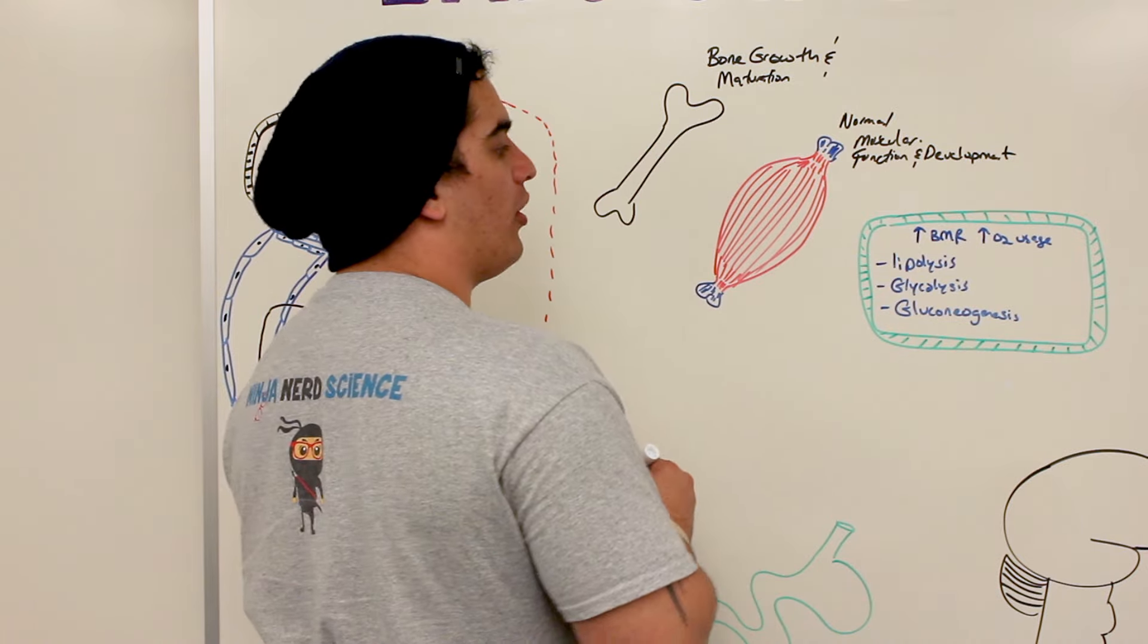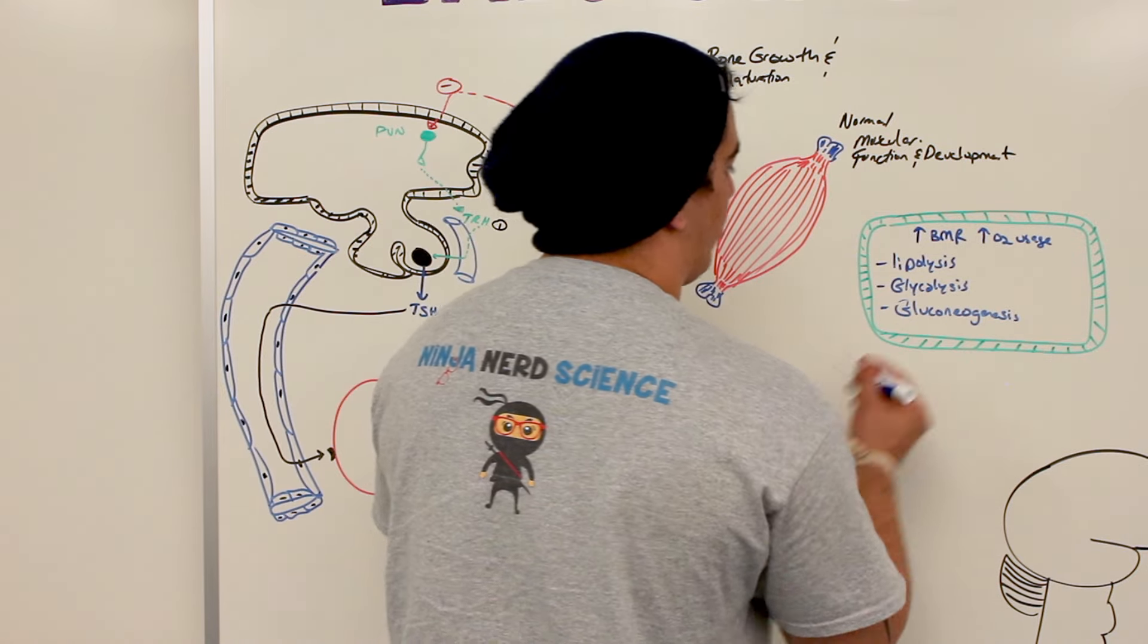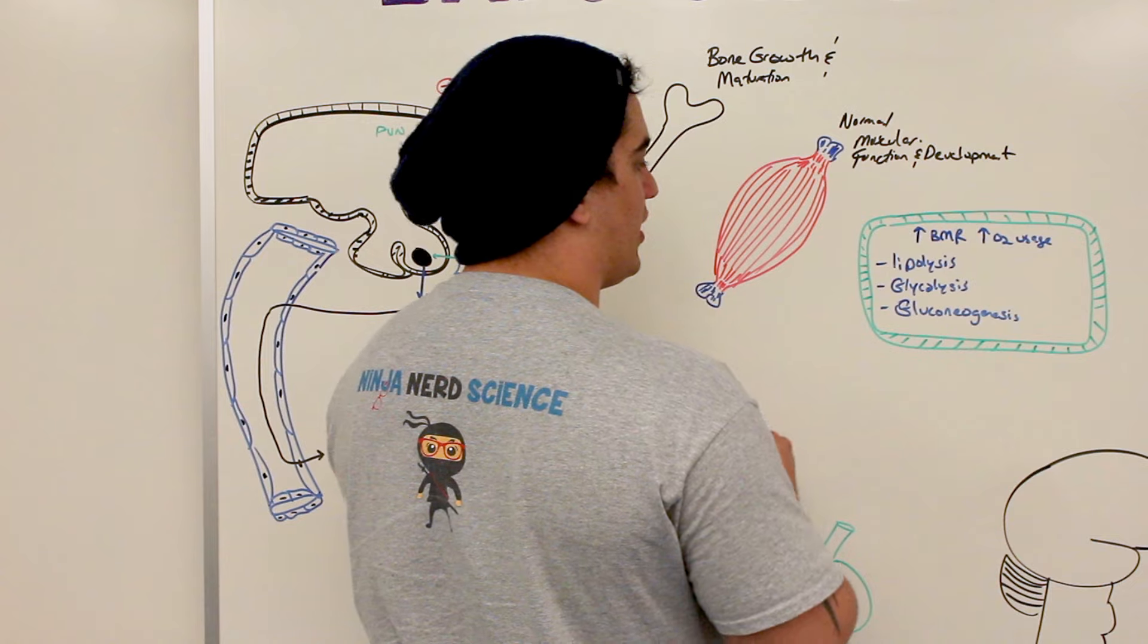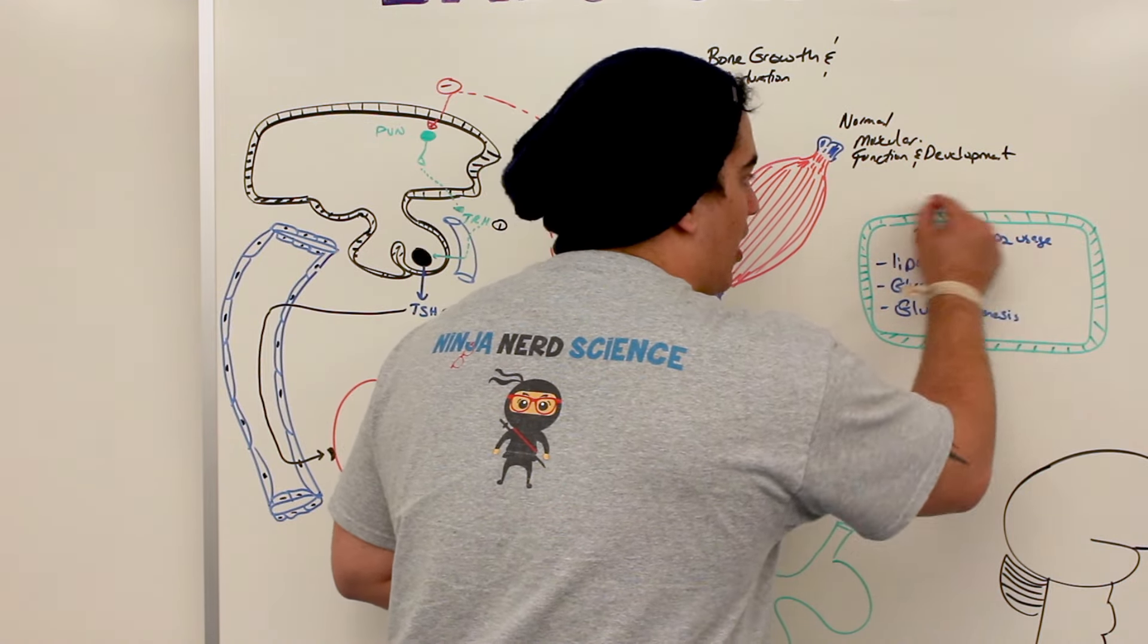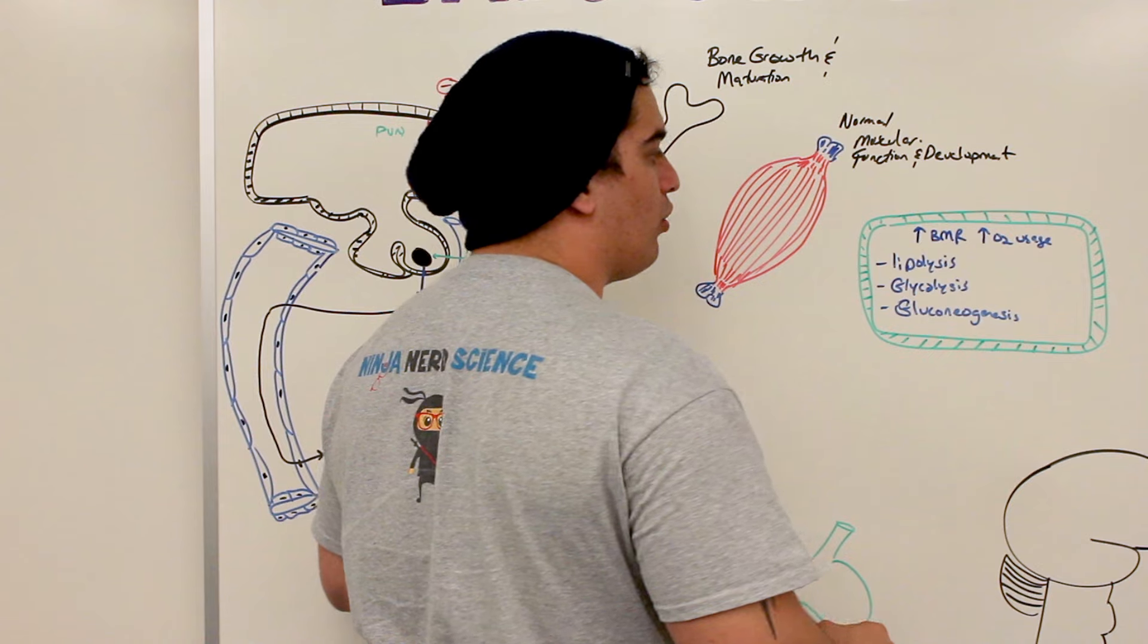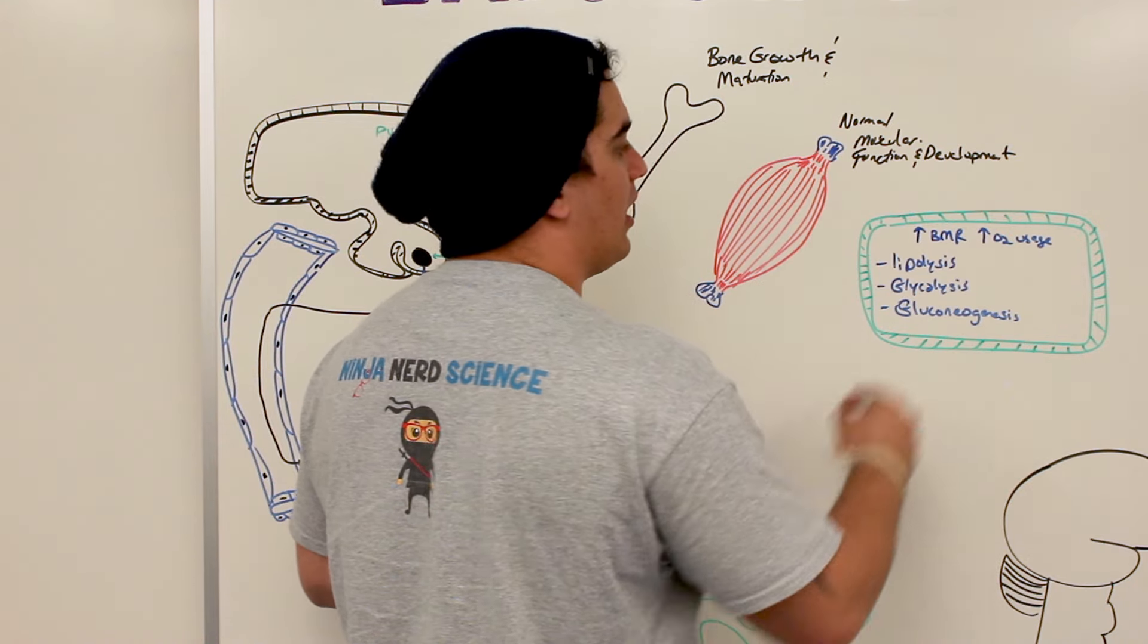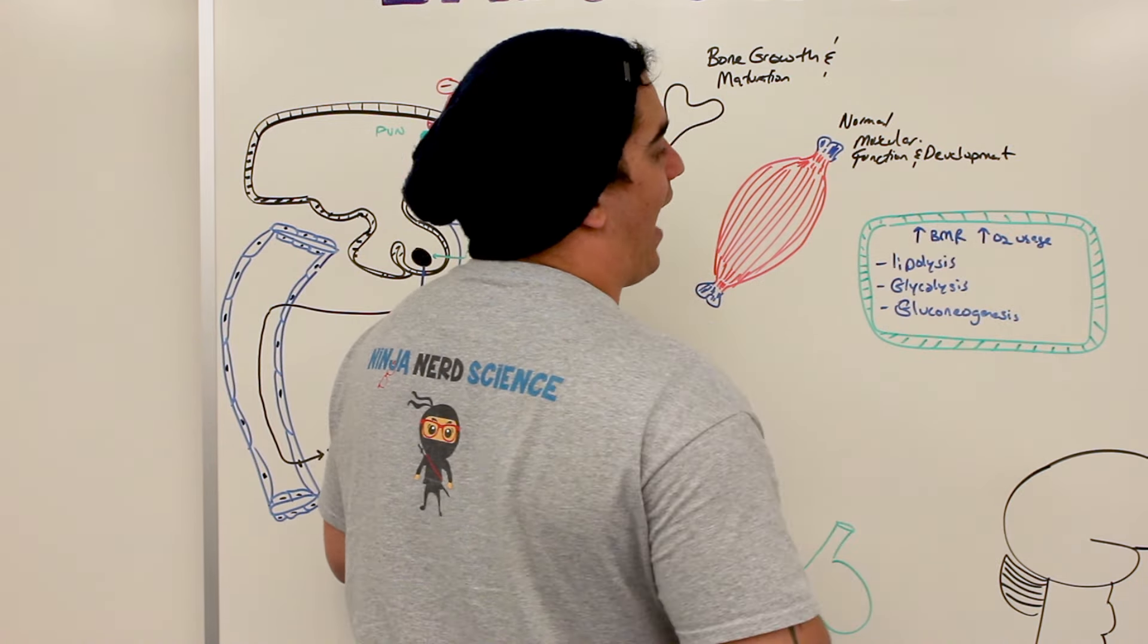So it's actually a hyperglycemic hormone, because it has the ability to increase blood glucose levels via gluconeogenesis. And it can break down substances because your basal metabolic rate is increasing. You want to break down a lot of glucose, so there's a lot of glycolysis and it helps to break down fat.